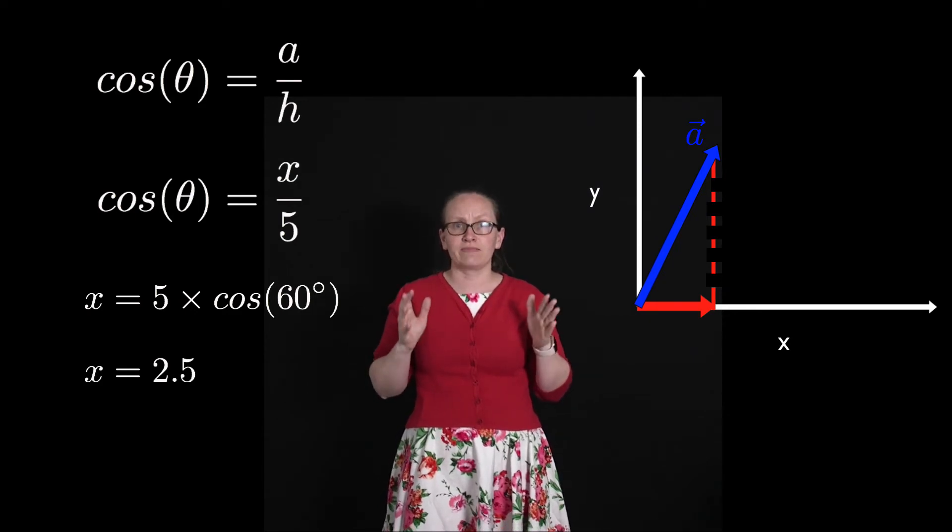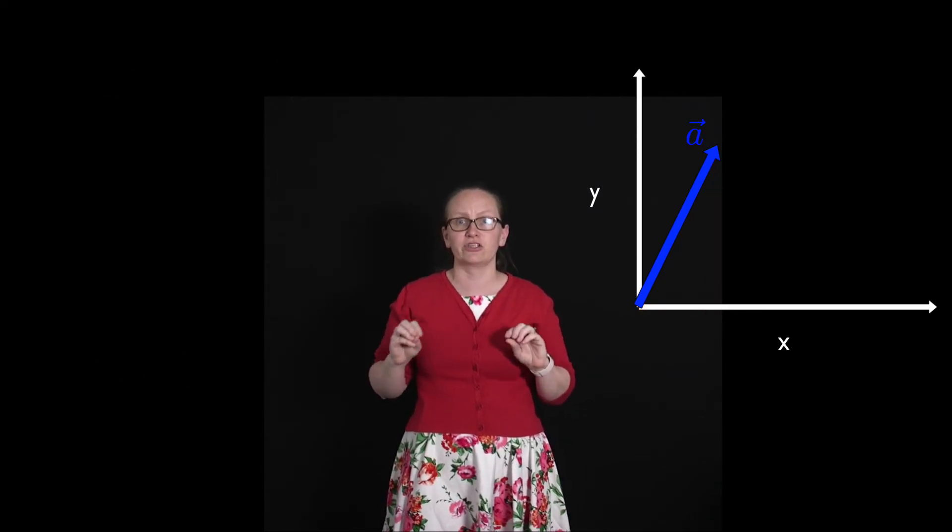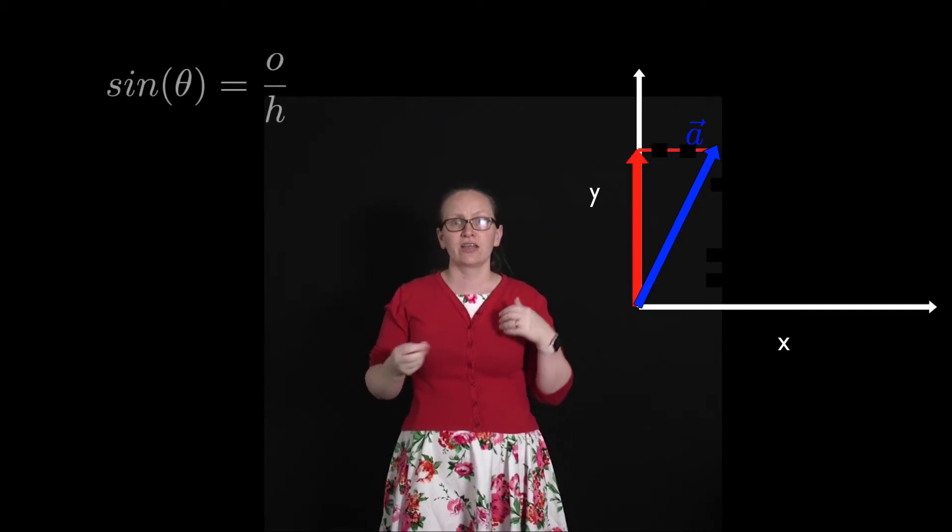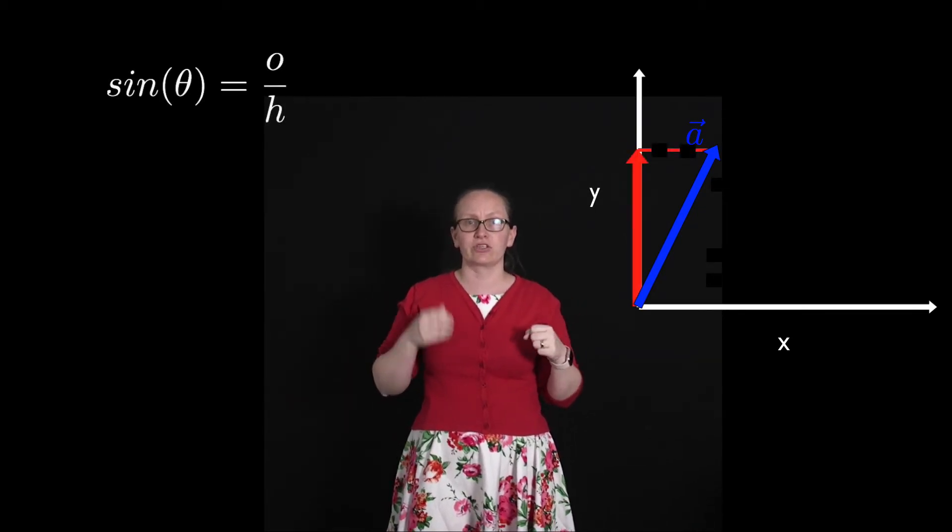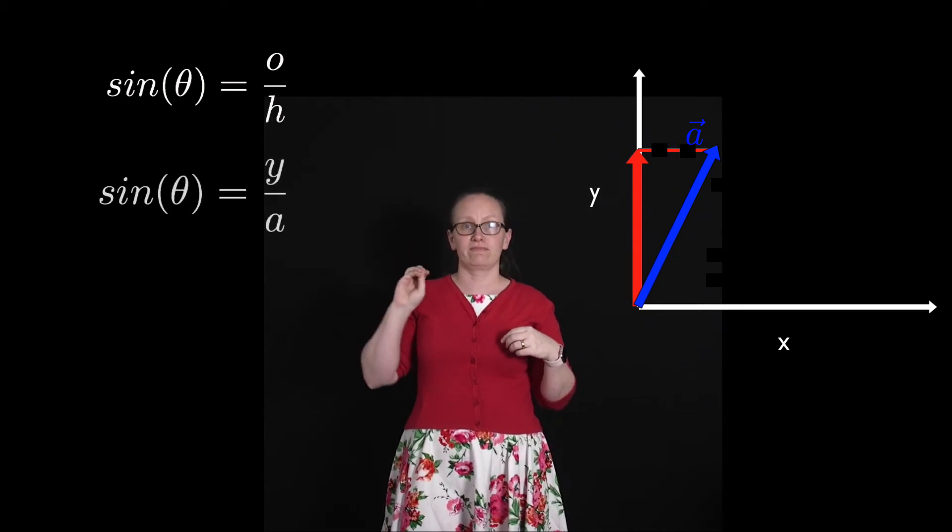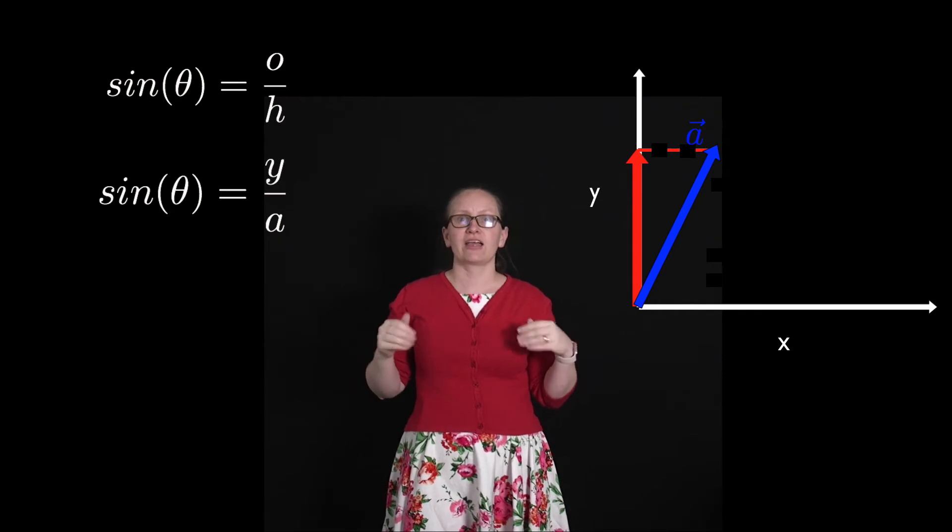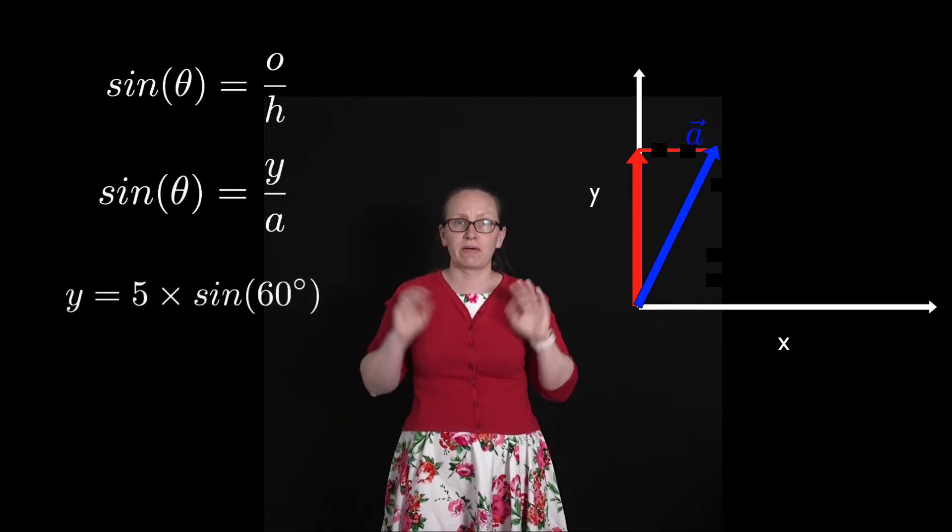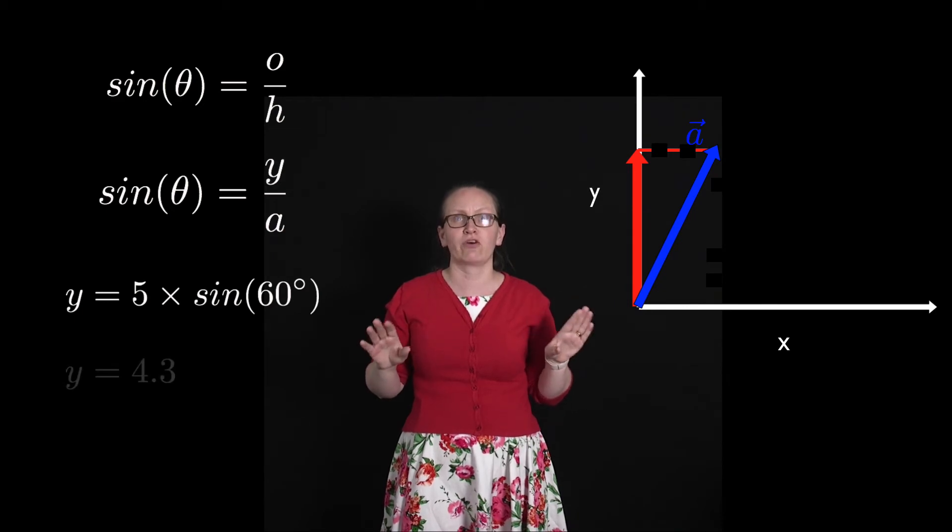Now we'll need to do the same thing to work out the magnitude of the vector in the y direction. So in this case we'll use sine. Sine theta is equal to the opposite over the hypotenuse. So in this case that is y over a, which is 5. And so we can write y is equal to 5 sine 60, which when we put it into the calculator is equal to 4.3.